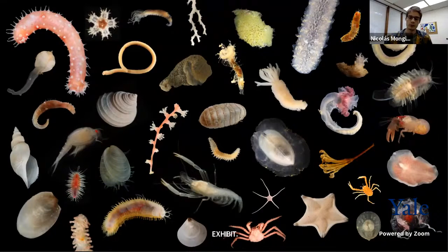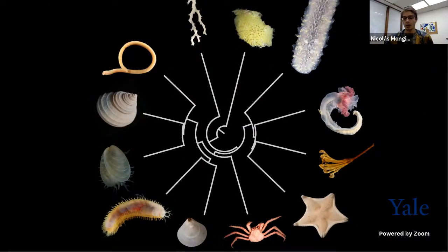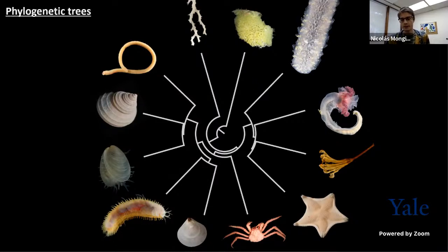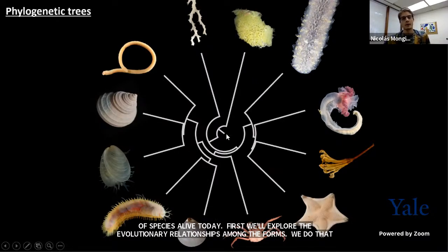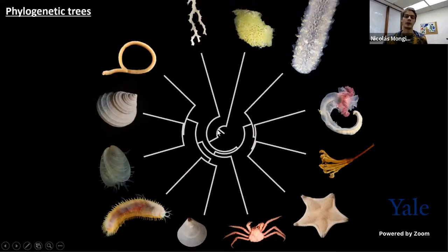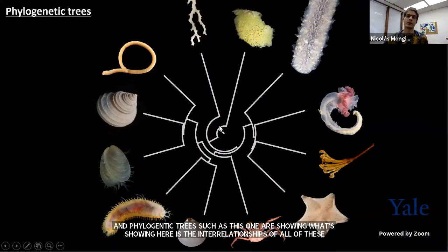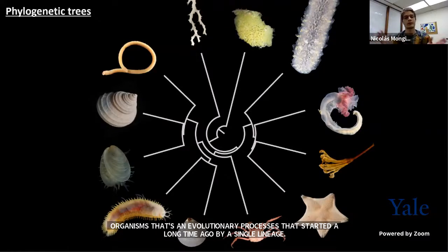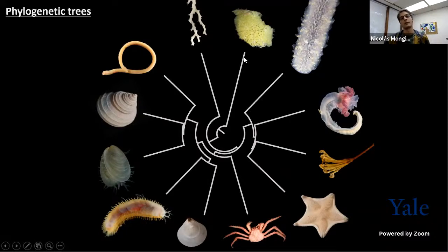What we need to first explore are the evolutionary relationships among all of these forms. The way we do that is through the use of phylogenetic trees, such as the one I'm showing you here in the center of this slide. Phylogenetic trees show the interrelationships of all of these organisms — an evolutionary process that started long ago from a single lineage. Whenever those branches split, that means an event of lineage splitting, leading up to the modern forms present in the periphery of that circular phylogeny.